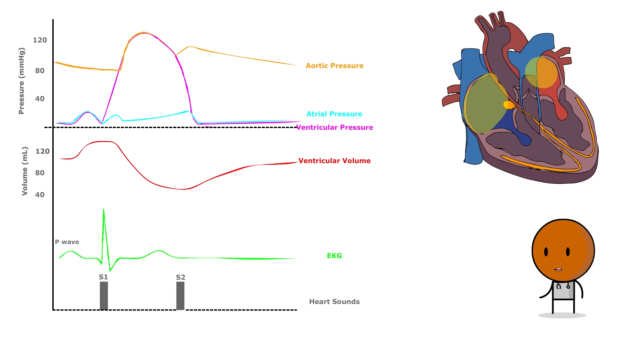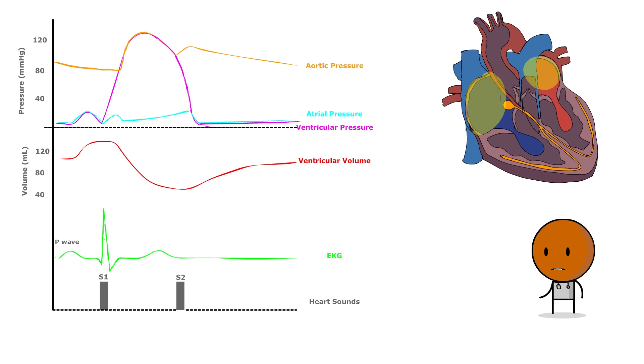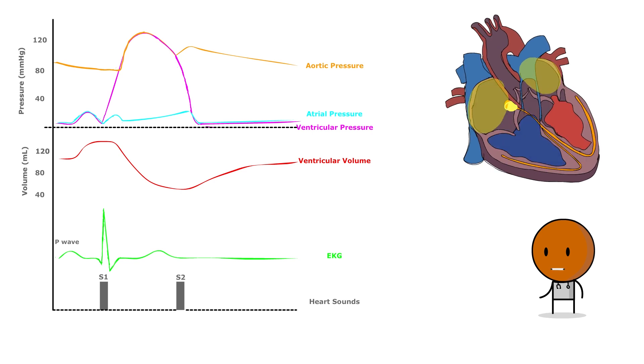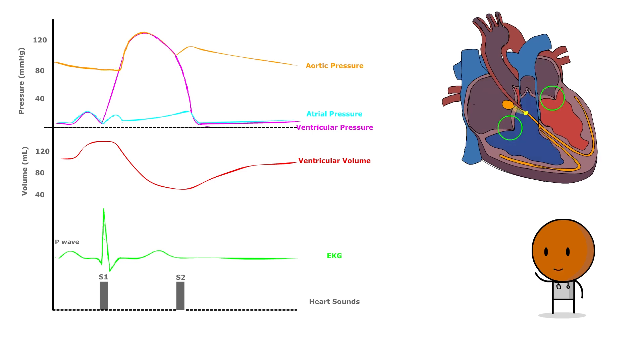As the contraction of the atria concludes, the pressure within them diminishes, changing the pressure differential across the AV valves and leading to their closure. This event generates the first heart sound, known as S1, signaling the commencement of systole.